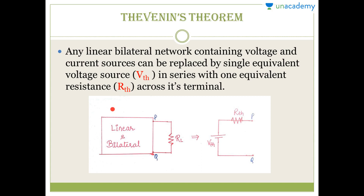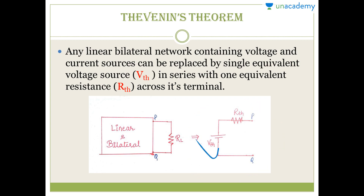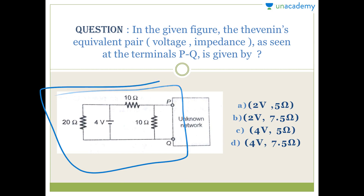What is Thevenin's theorem? Any linear bilateral network containing voltage and current sources can be replaced by a single equivalent voltage source VTH in series with one equivalent resistance RTH across its terminals. This is how we convert any linear bilateral network into the Thevenin network, where PQ are the terminals and the load is connected externally.